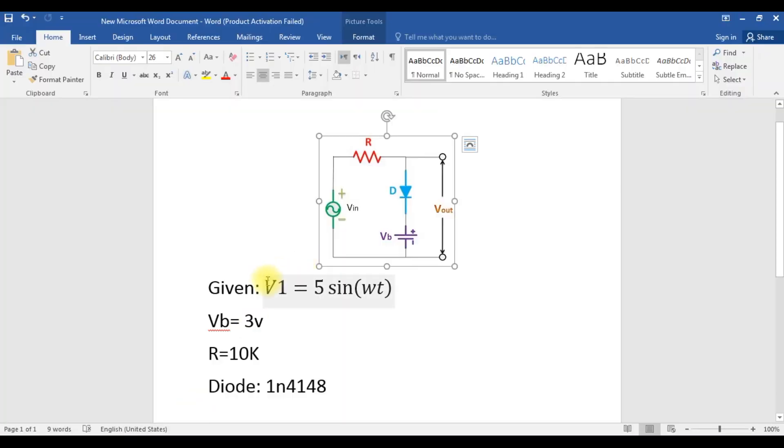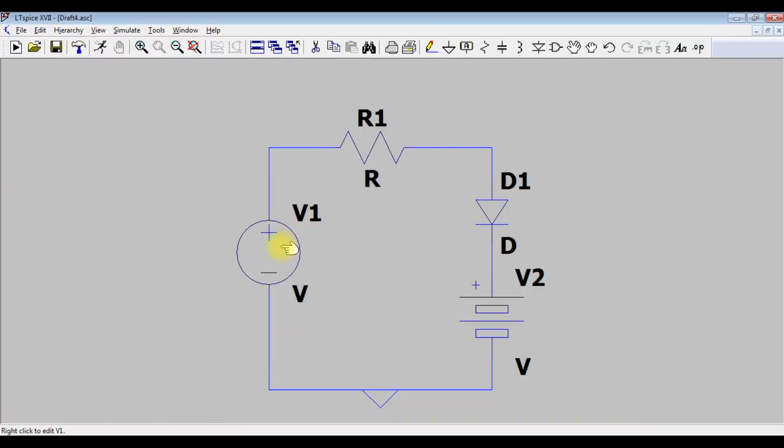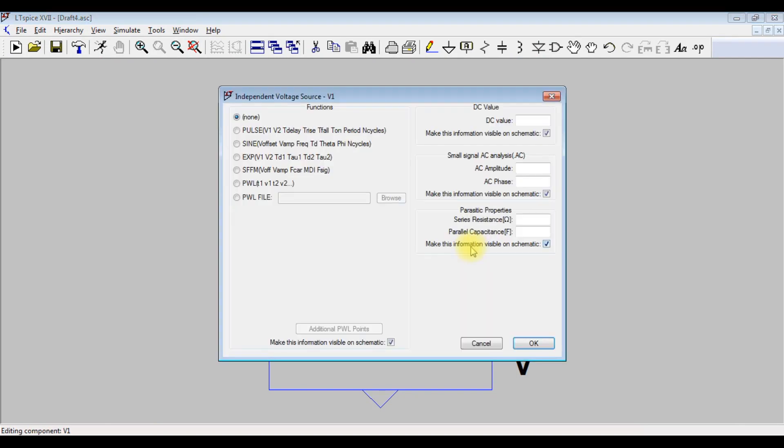The value of the source is V1 equal 5 sine omega t. The source is an AC source. To edit the source, we press on right click, advanced, choose sine. Amplitude is 5 volts and the frequency is 1k.